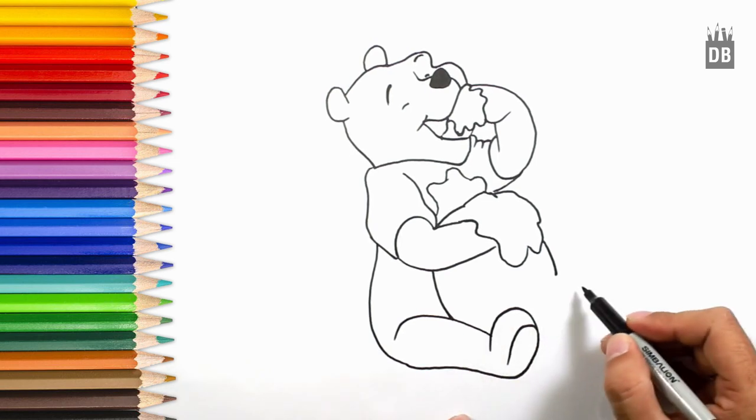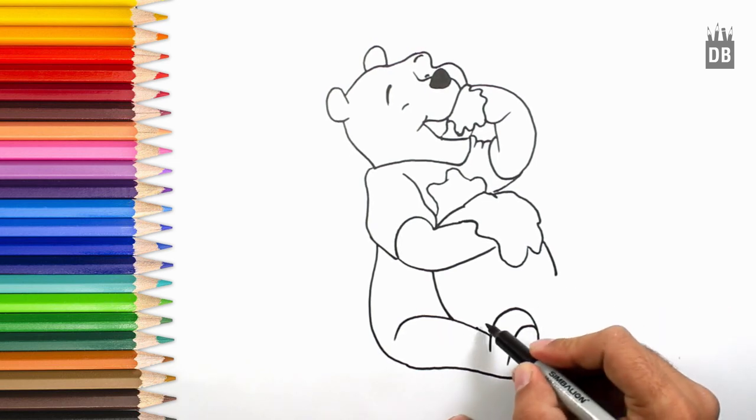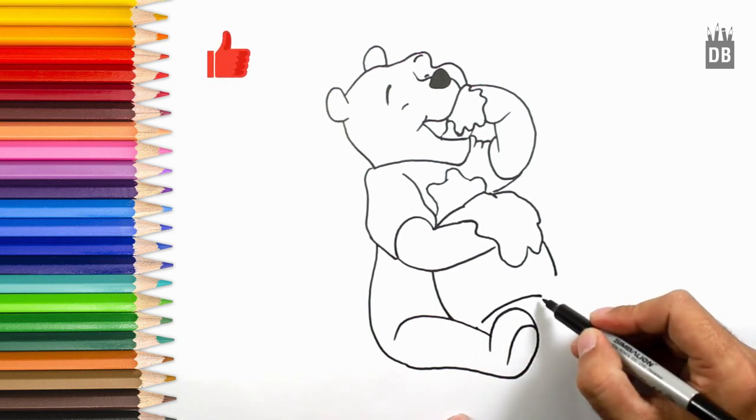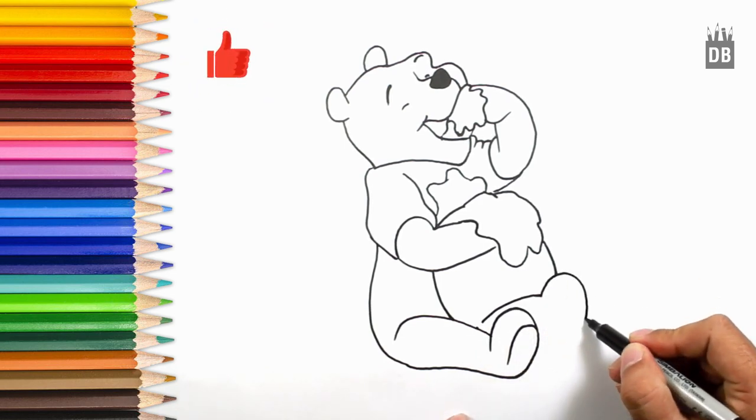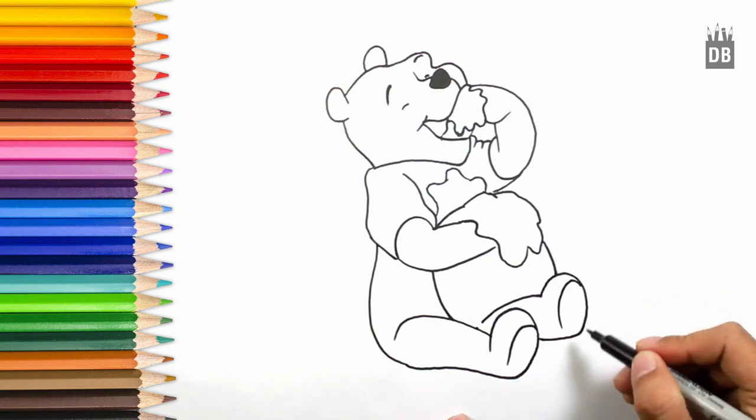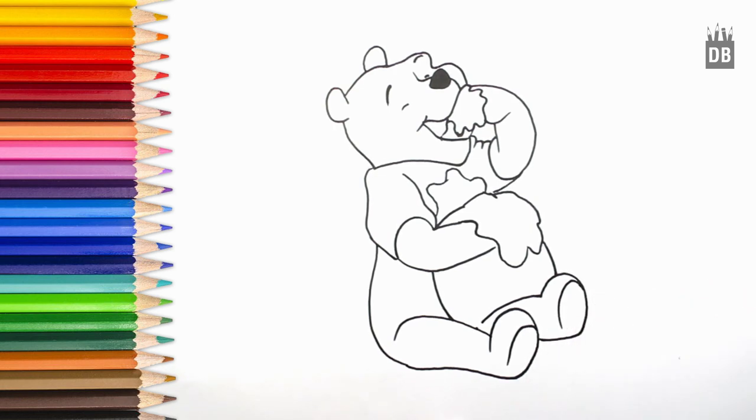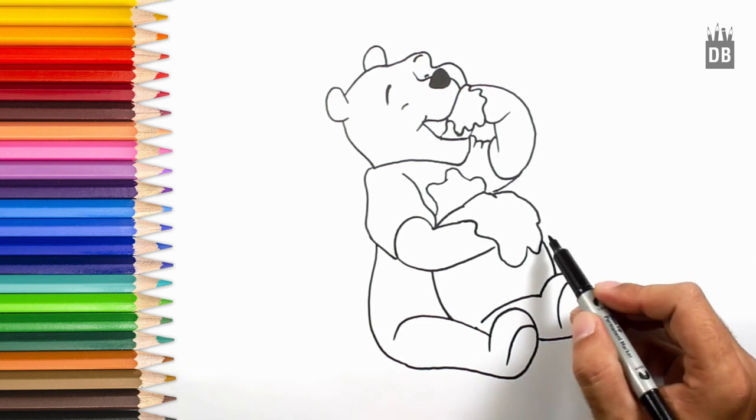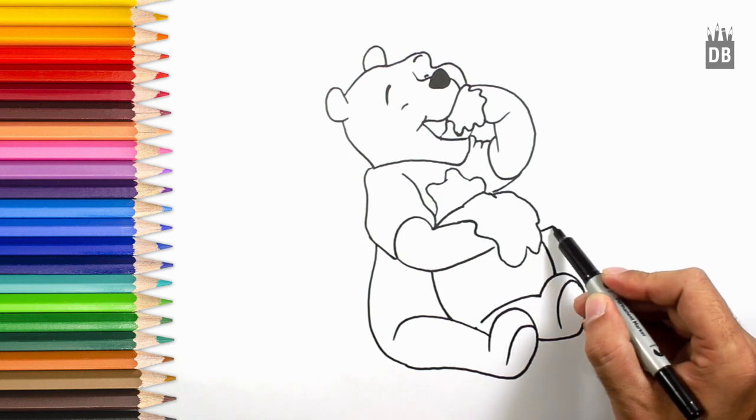So the second line will give the idea of where the jar is ending. Like this. And behind, there are two more jars which are very easy to draw.